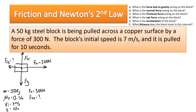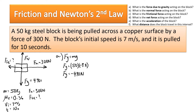Part A asks for the force due to gravity. Using FG equals MG, you get negative 490 Newtons — that's 490 Newtons downward.